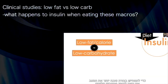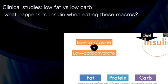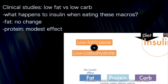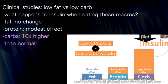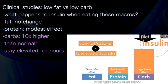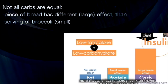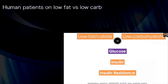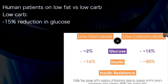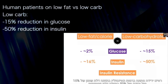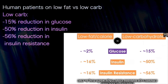Now to highlight low-carbohydrate diets — I want to present data pitting low-fat versus low-carbohydrate against each other. When we eat fat, insulin won't change. When someone eats protein, there can be a modest effect on insulin. When someone eats carbohydrate, there can be a significant insulin effect — ten times higher than normal and elevated for hours. Not all carbohydrates are created equal: a piece of bread has a very different effect than a serving of broccoli. In human studies, we saw only a significant reduction in glucose on the low-carbohydrate diet. We saw a modest 16% reduction in insulin on the low-fat diet versus a 50% reduction on the low-carbohydrate diet, with multiples greater improvements in insulin resistance on low-carbohydrate.